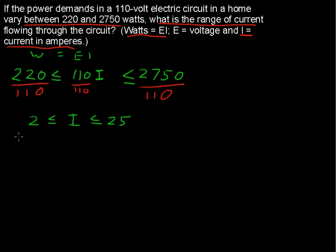So the current, the range of current, we can say, is between 2 and 25 amps. And I'll just rewrite that here. Current ranges from 2 to 25 amps, or amperes. All right, so that's just a quick look at understanding some inequalities.